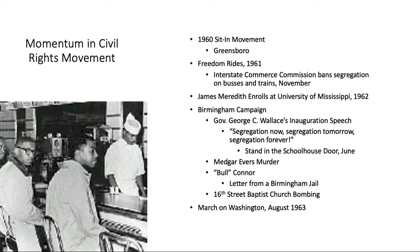Oftentimes the Freedom Rides did end in violence — buses were burned and attacked, and riders were assaulted. In 1962, after much legal travail, James Meredith became the first black student to enroll at the University of Mississippi. In Birmingham, Alabama, Martin Luther King Jr.'s Southern Christian Leadership Conference and other groups like CORE and SNCC began the Birmingham Campaign, a campaign to protest voting rights violations. Governor George C. Wallace had proudly declared in his inauguration speech that he supported segregation now, segregation tomorrow, and segregation forever.